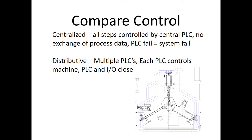Comparing control approaches: centralized control uses a central PLC, and if that PLC goes down, the system completely fails. This Flex system has a master PLC — if the master PLC goes down, everything goes down. It also has zone PLCs, which is distributive control. With multiple PLCs, each one controls its machine and associated I/O. Even if one conveyor and robot faults, the other conveyor and robot can keep working because they have independent zone PLCs, though all are tied back to the master PLC.